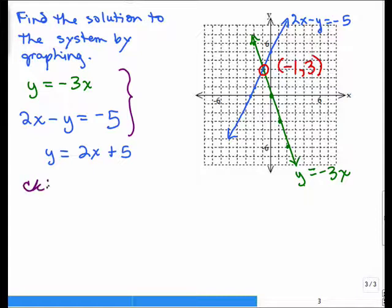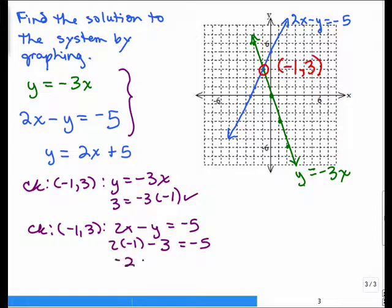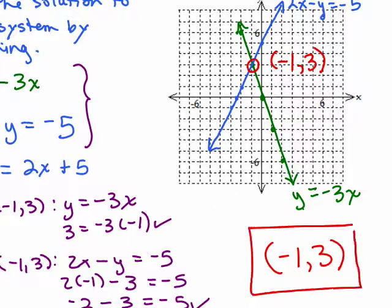So let's check negative 1, 3 into y equals negative 3x first. So we're going to put in 3 for y, negative 1 for x, and yep, that's 3 because 3 is going to equal 3. And then let's check negative 1, 3 into 2x minus y equals negative 5. Always check it in the original, not the y equals 2x plus 5 because we might have made a mistake solving for y. So we have 2 times negative 1 minus 3 equals negative 5. That's negative 2 minus 3 is negative 5, and yes, negative 2 minus 3 is also negative 5. So the solution then is the ordered pair negative 1, 3, because that is a solution to both equations, and I solved it by graphing.